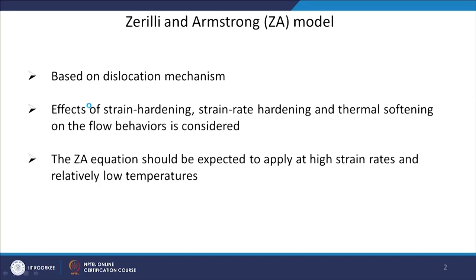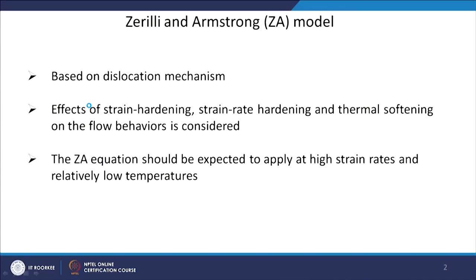The first is the ZA model — the Zerilli-Armstrong model. This model is based on dislocation mechanisms: how dislocation multiplication and dislocation recovery are taking place. We are directly relating the constitutive equation with the actual deformation mechanism. It is based on the dislocation mechanism, and the effects of strain hardening, strain rate hardening, and thermal softening on the flow behaviour are all considered from a physical basis.